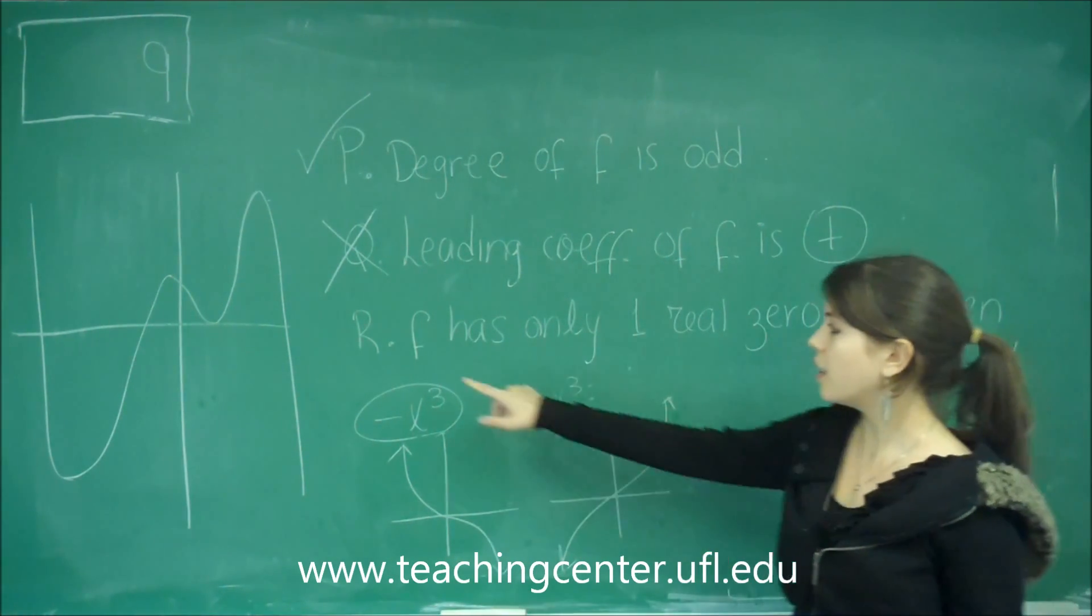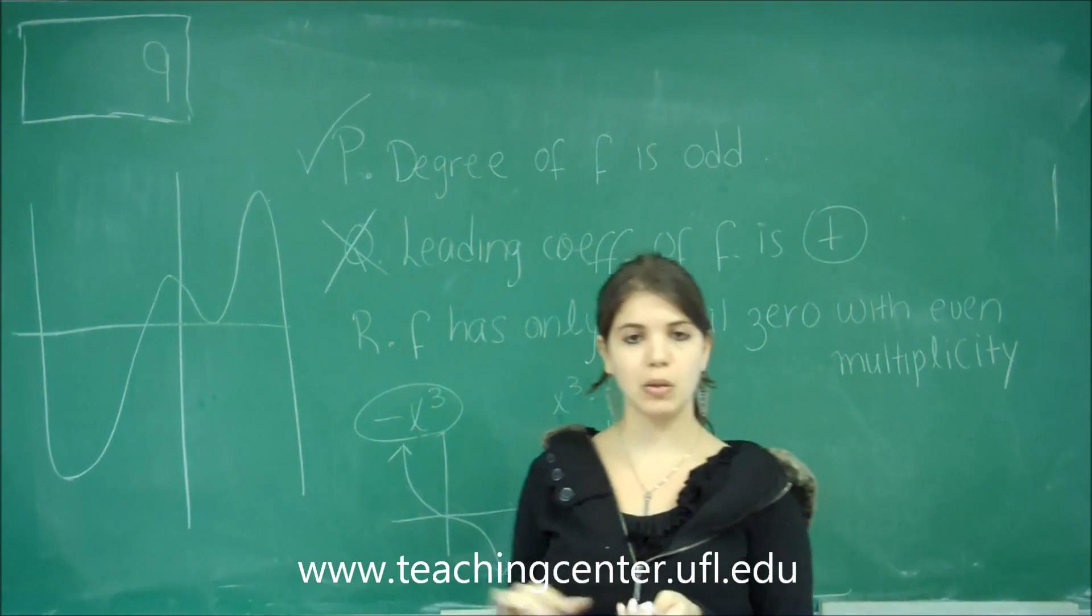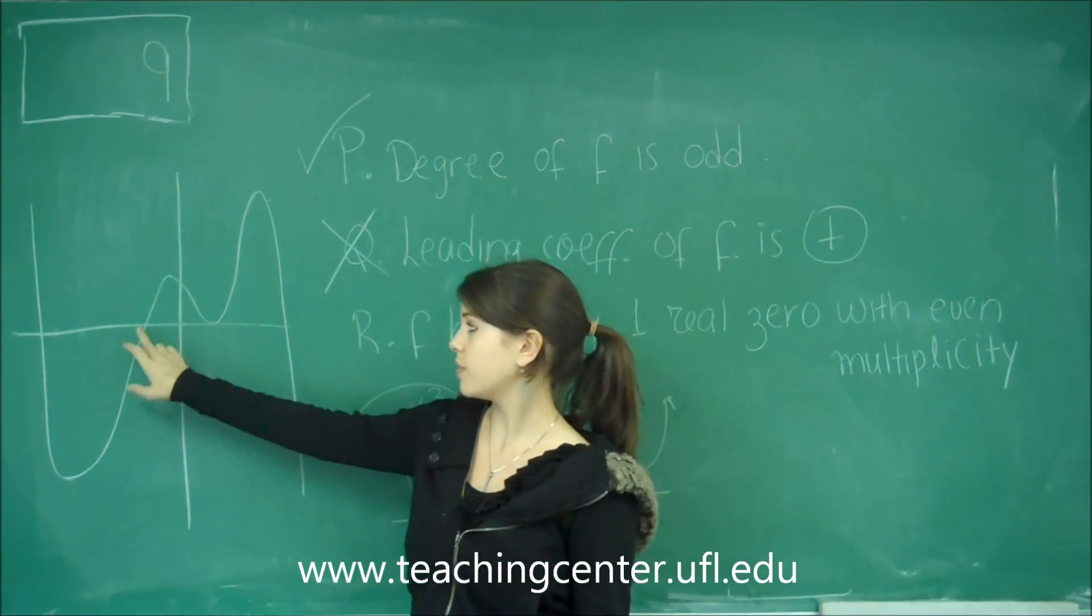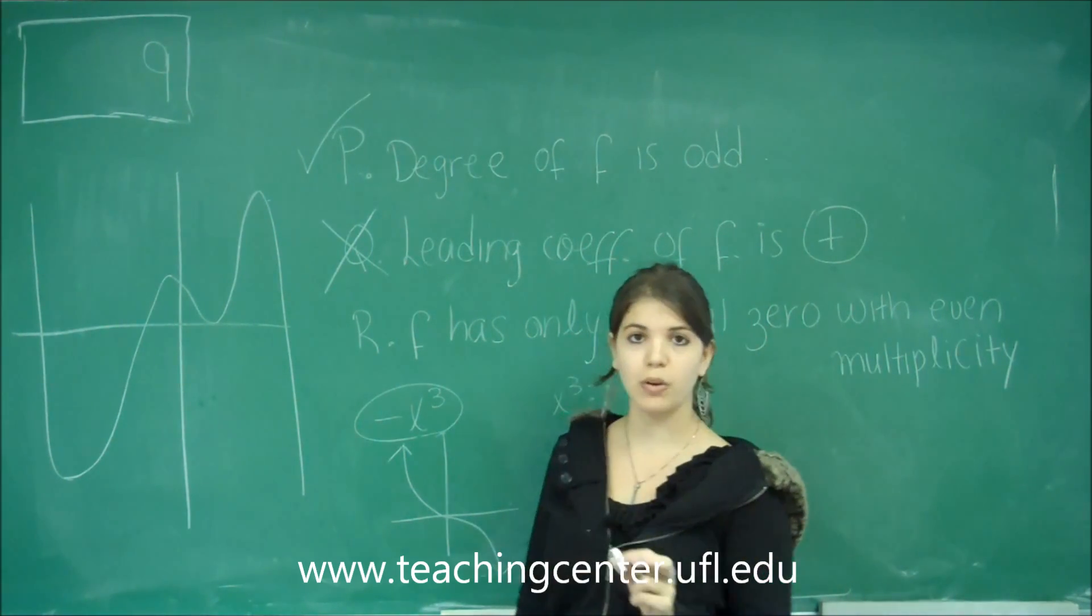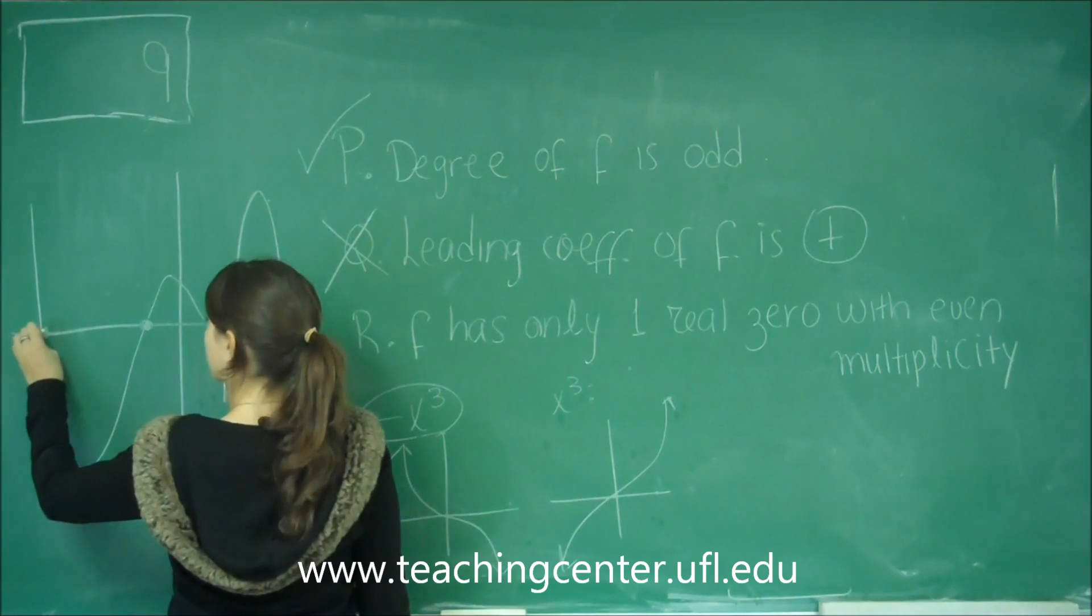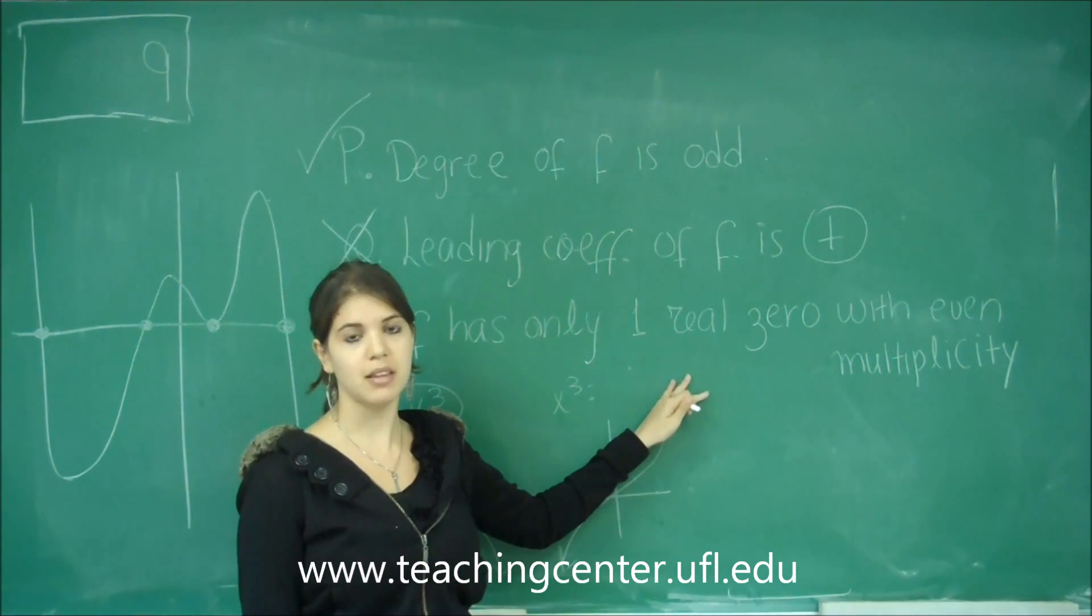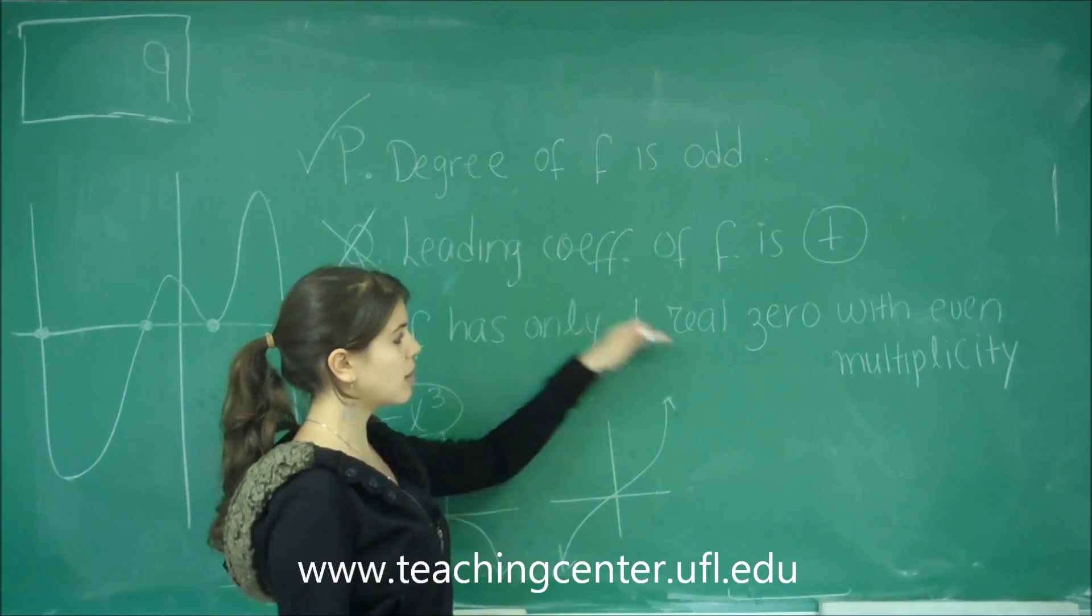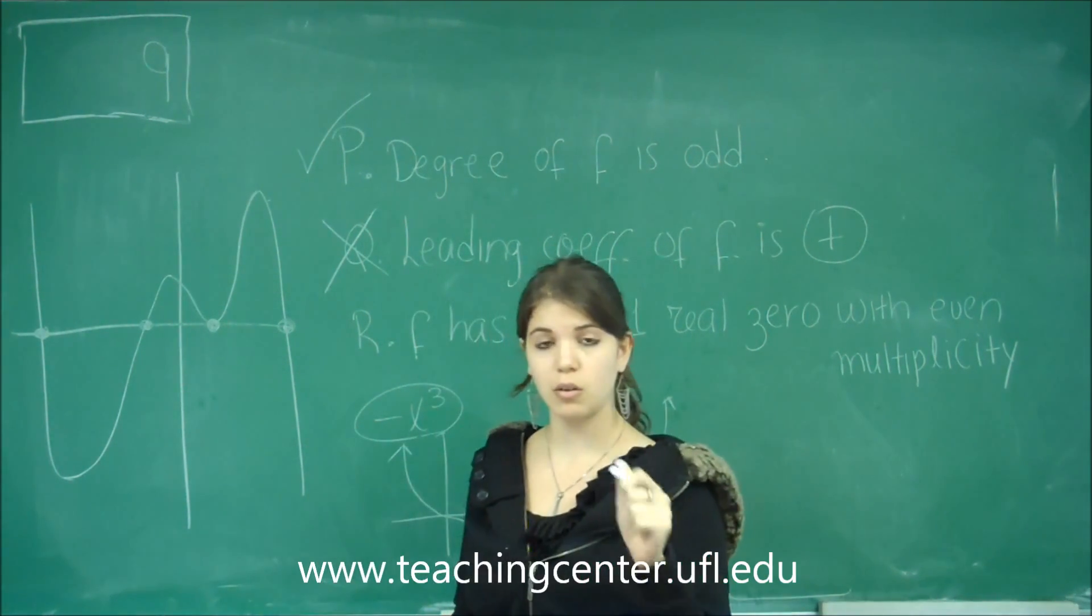And lastly, R says, f has only one real zero with even multiplicity. The multiplicity is no longer related to the way the ends are on this graph. The multiplicity is related to whether at each zero in the graph, the function crosses or just touches the point. Let's determine where the zeros of this function are. We have one right here, one over here, one over here, and one over here. If you had read this option, only half of it, and not have read the whole thing, you might have said that it's wrong. Because you would have read, f has only one real zero, and you would have said no, it has four. But that's not true, because you have to read the whole thing. Only one of these zeros has even multiplicity. That's what we're trying to see if it's true or false. Even multiplicity is when the point only touches and doesn't cross.